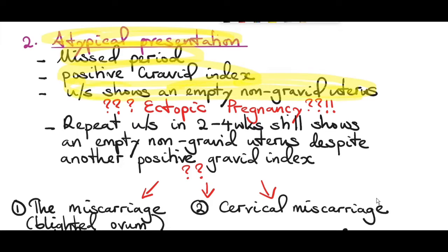So in this scenario where there's an empty non-gravid uterus, your mind starts racing — is it an ectopic pregnancy? Calm down. If the patient has no signs and symptoms of an ectopic pregnancy, you can safely repeat the ultrasound in two to four weeks. And if it still shows an empty non-gravid uterus despite another positive pregnancy test, you should now start asking yourself questions.